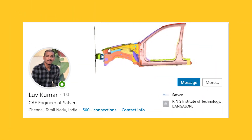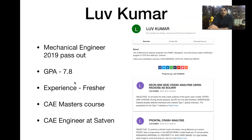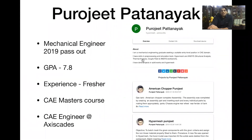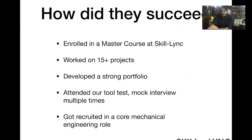Lav Kumar, another fresher who graduated in 2019 with a GPA of 7.8, took our CAE Masters course and is now a CAE Engineer at Satyam Ventures. You can view his profile at projects.skilling.com. Purujit also graduated in 2019 with a GPA of 7.8 and got a job at Access Cadres as a CAE Engineer.